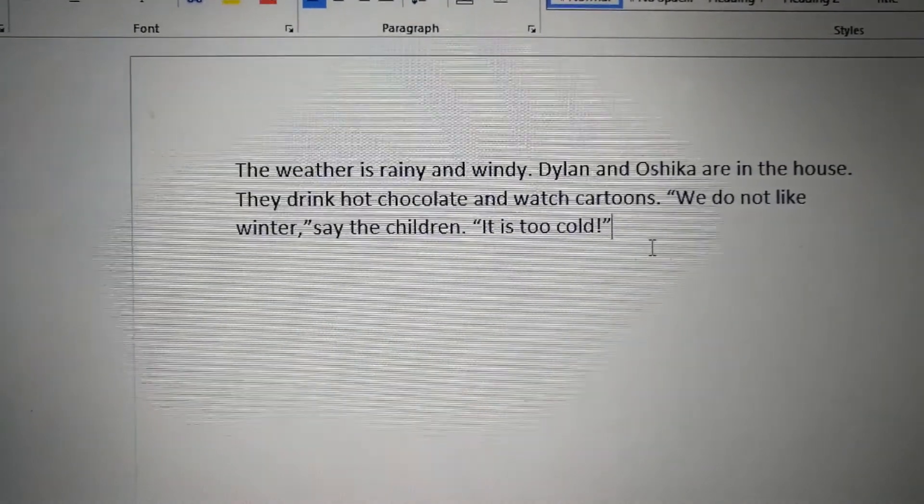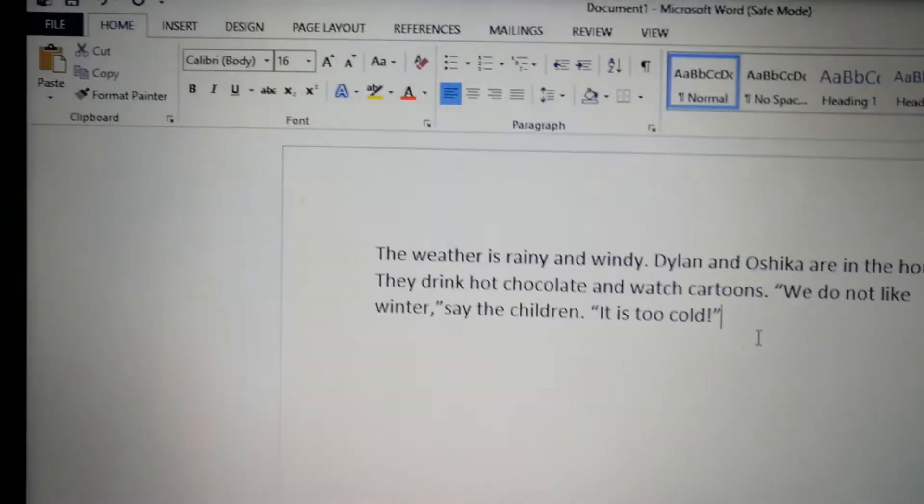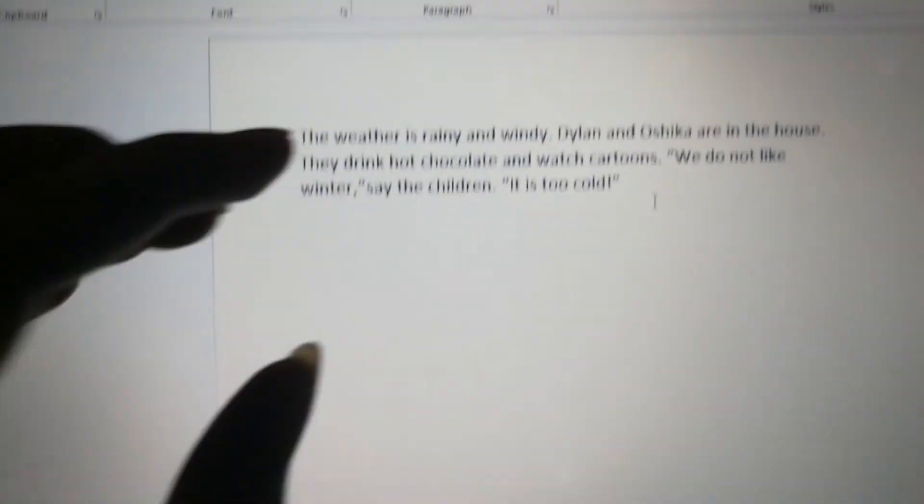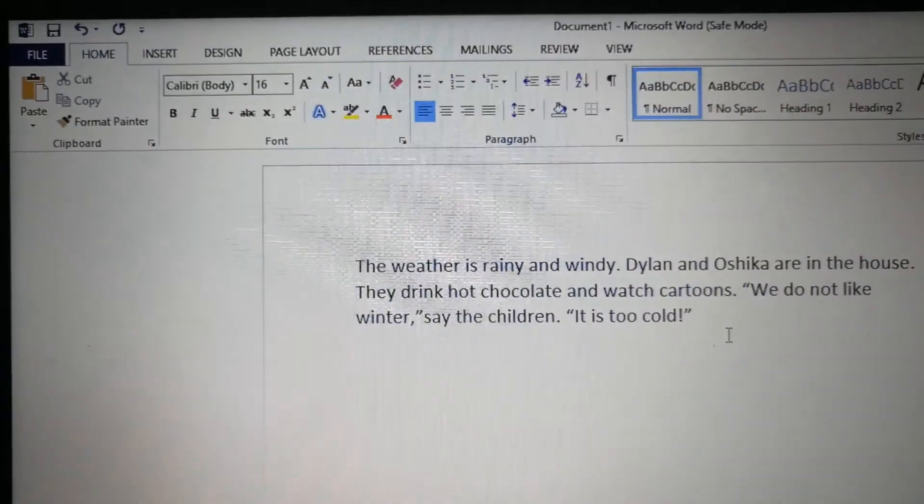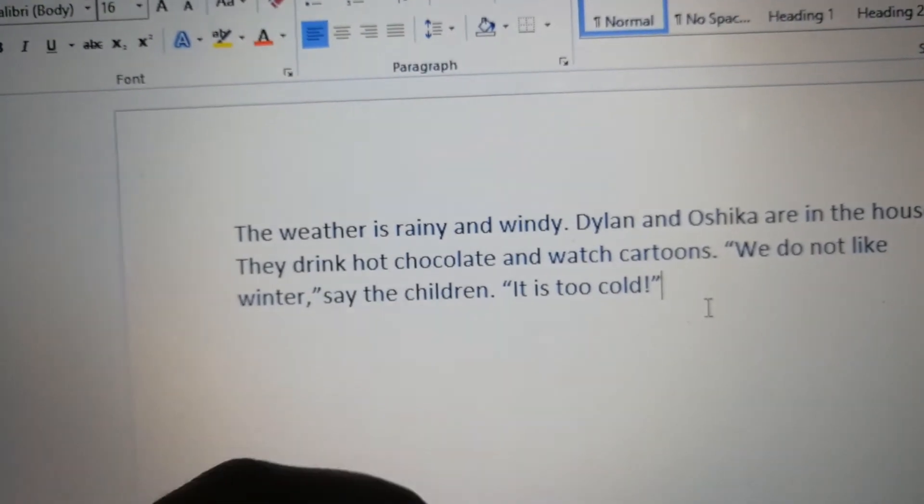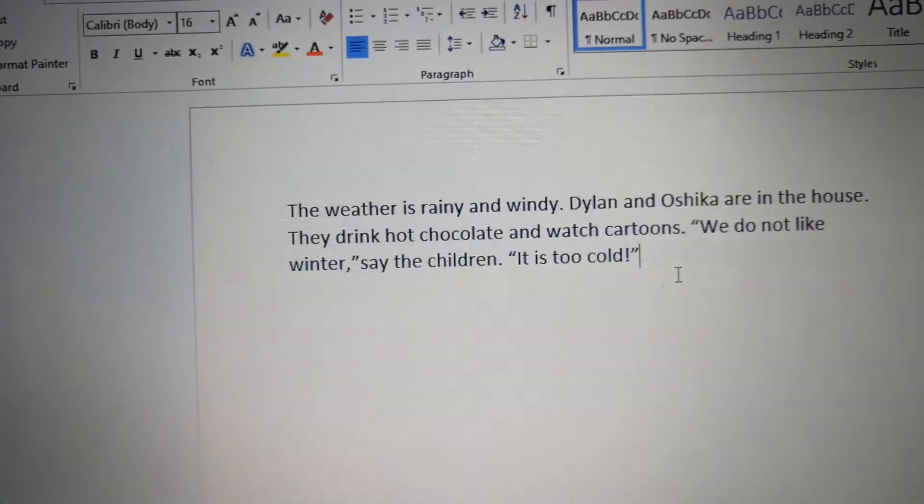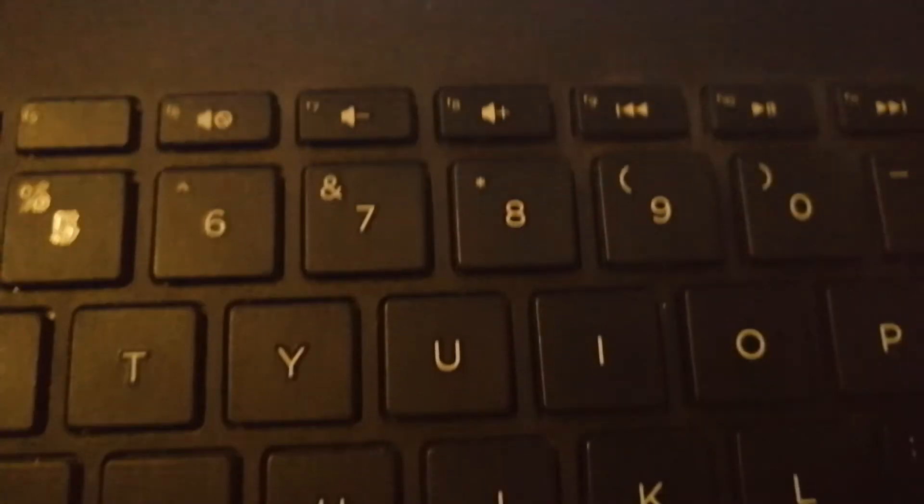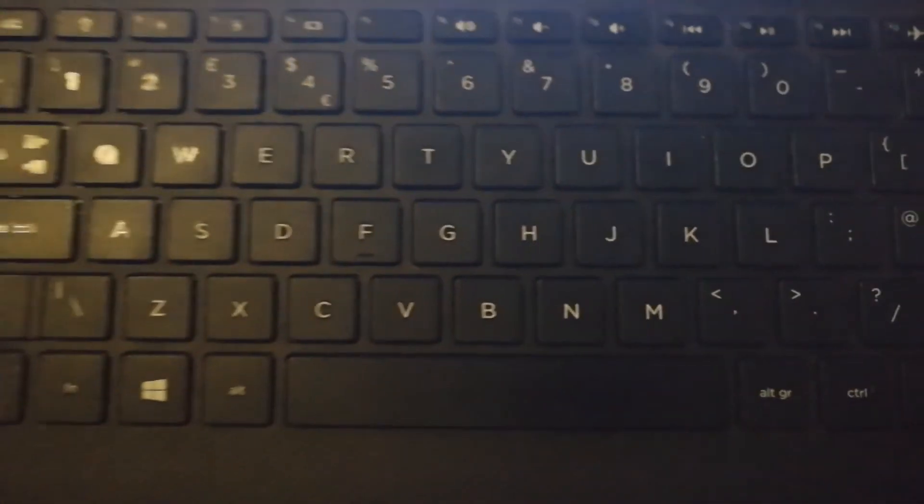So here is Microsoft Word. This is Microsoft Word. I hope you know how Microsoft Word looks. So here is a paragraph. I have typed it here for you. Like this, I will show you how we can use the arrow key. So what you're going to do is you're going to look at your keyboard. This is your keyboard.